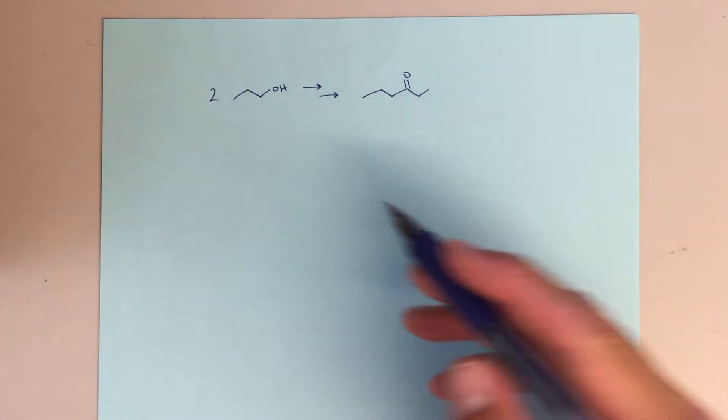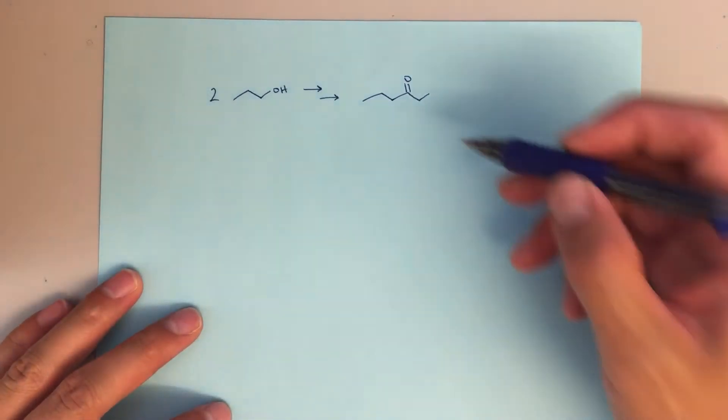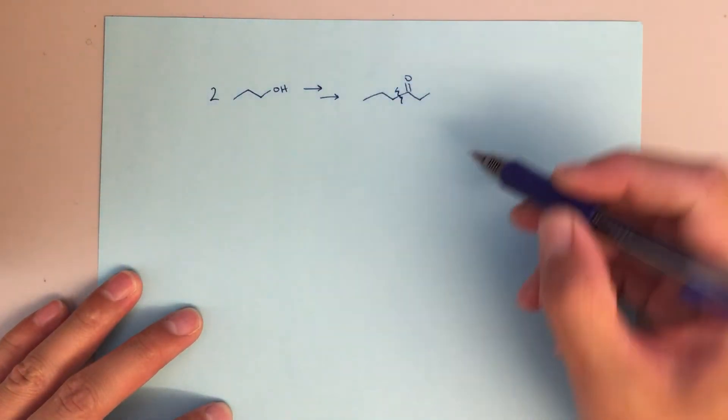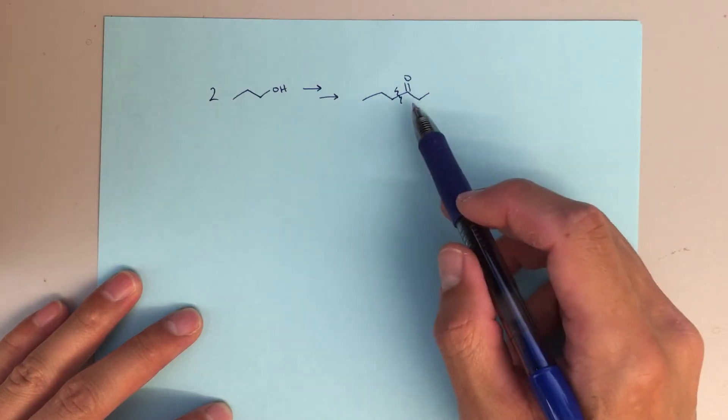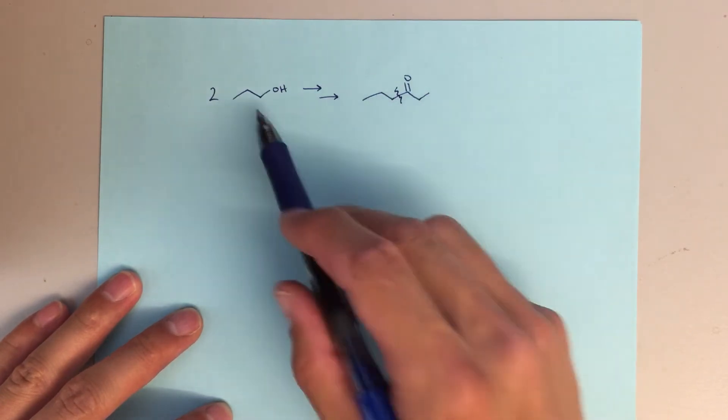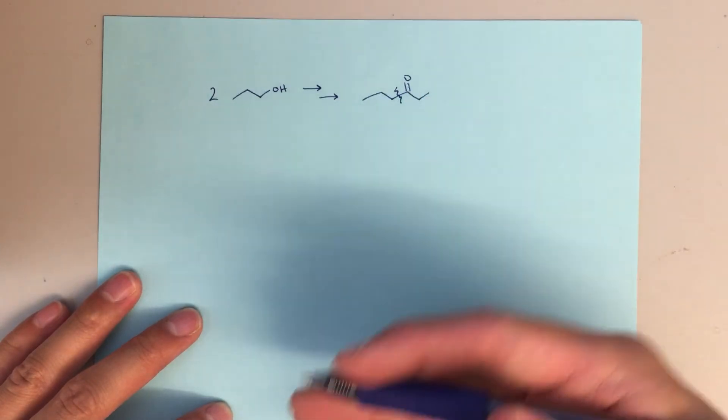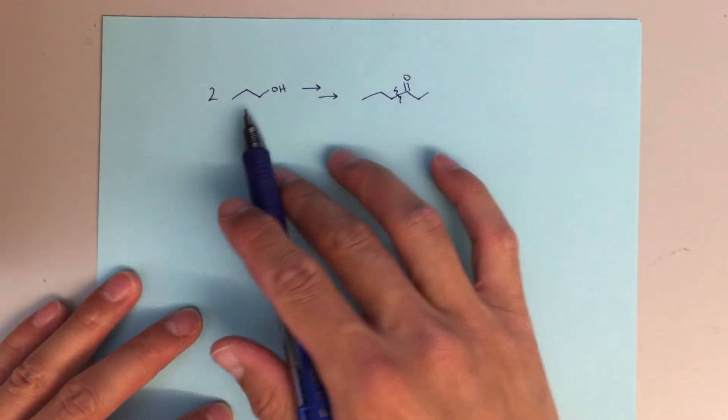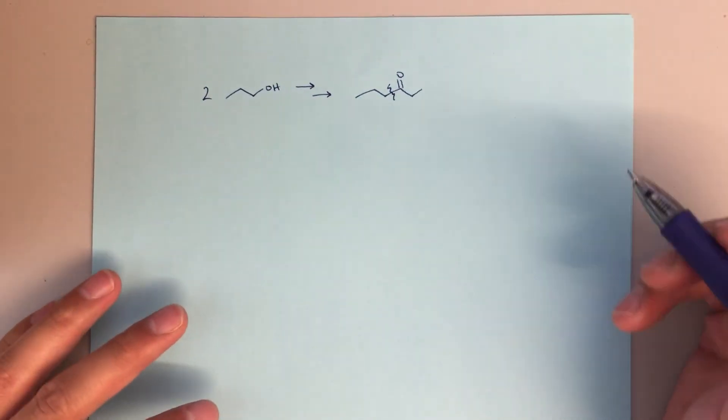So right away, the first thing I'm going to think about is, if this is my source of carbon, then I can imagine that I'm going to break this final product into two pieces where 1, 2, 3, these carbons come from one equivalent and then 1, 2, 3, those carbons come from the other equivalent of my N-propyl alcohol.